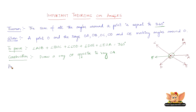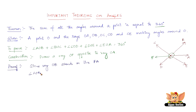Now let us see the proof. Since ray OB stands on the line FA, we have — from the previous theorem, also known as linear angles — that angle AOB plus angle BOF equals 180 degrees.